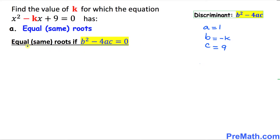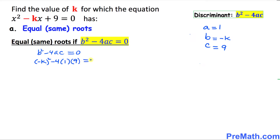This quadratic equation has 2 equal or same roots if the discriminant equals 0. So let's fill in the blanks: b squared minus 4ac equals 0. We know a equals 1, b is negative k, so we get negative k squared minus 4 times 1 times 9 equals 0. This simply becomes k squared minus 36 equals 0.